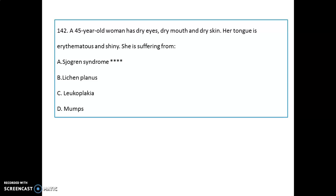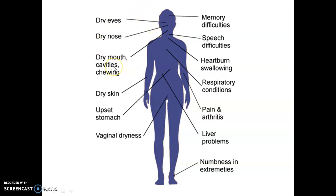A 44-year-old woman has dry eyes, dry mouth, and dry skin. Her tongue is erythematous and shiny. The diagnosis is Sjögren's syndrome. Remember, Sjögren's syndrome features include dry eyes, dry nose, dry mouth, cavities, chewing difficulties, dry skin, upset stomach, vaginal dryness, memory difficulties, speech difficulties, heartburn, swelling problems, respiratory conditions, pain, arthritis, liver problems, and numbness in extremities.